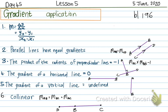Yesterday we learned that to work out the gradient, it's about how steep the line is. To work out the gradient, it's delta y over delta x, which is the difference in y over the difference in x.